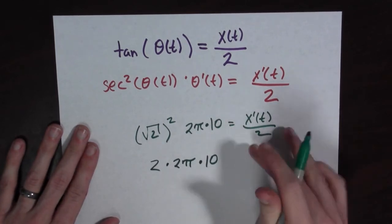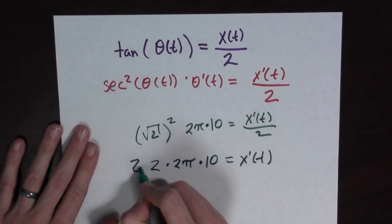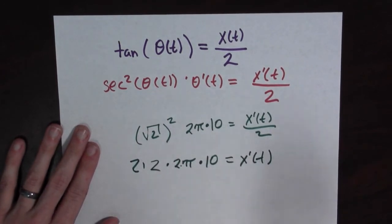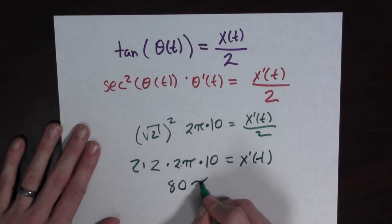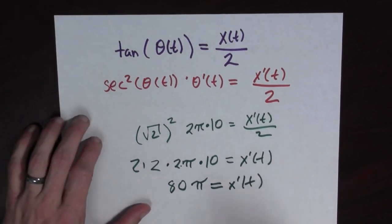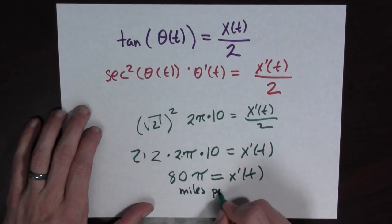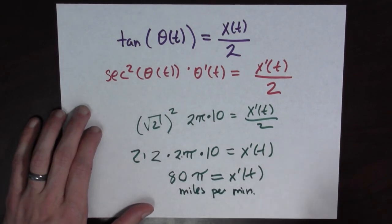And if I want to, I can multiply both sides by 2. So that's equal to x'(t). And I get 2 times 2 times 2 times π times 10. That's 80π is equal to x'(t). And this is 80π miles per minute.